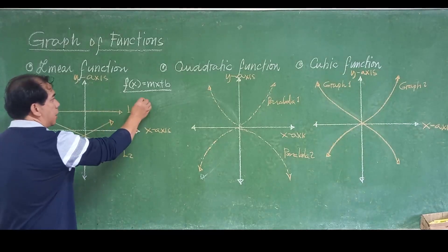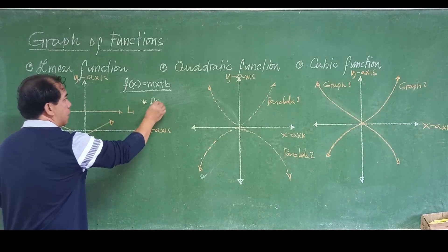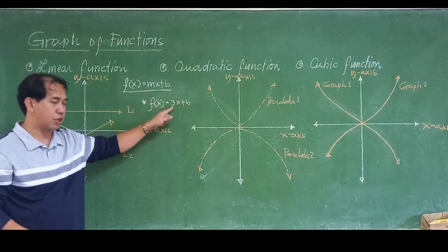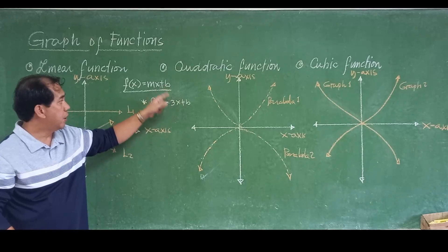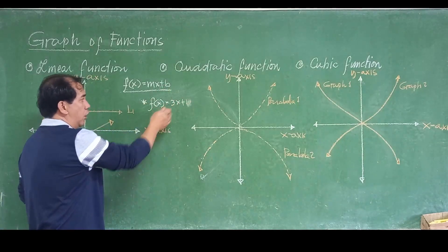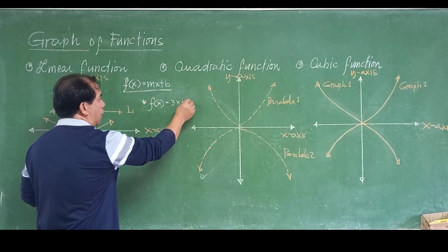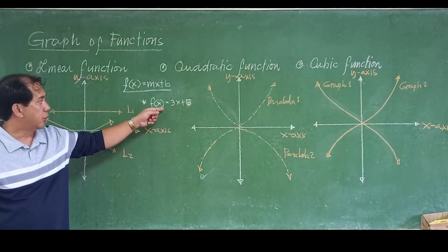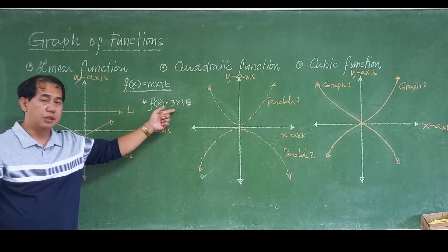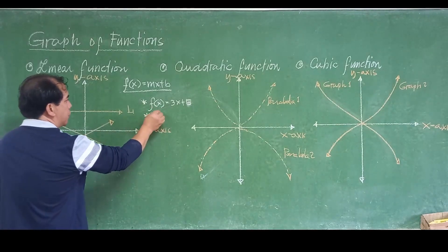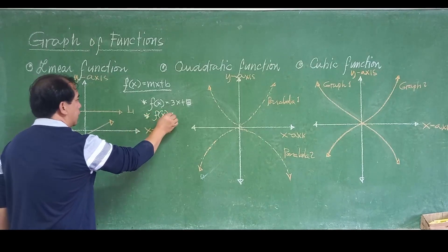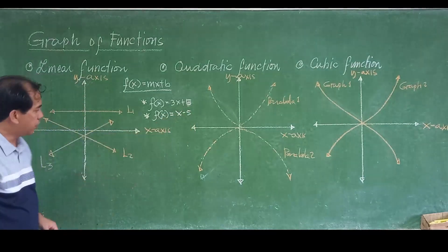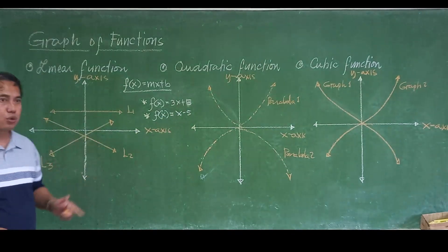What are the examples? We might have f(x) = 3x + b, where the value of m is always a numerical number. For instance, f(x) = 3x + 5 — this is considered to be a linear function. Notice that the degree of this function is in the first degree. We can also consider f(x) = x − 5, where the degree of x is in the first degree. Every time a function is in the first degree, it is considered to be a linear function.